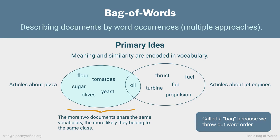For example, articles with pizza recipes probably share a lot of the same vocabulary like flour, tomatoes, yeast, and so on. But they won't have as much vocabulary in common with articles about jet engines. So if two documents have a lot of overlapping vocabulary, then they likely belong to the same class. It's called a bag because the order of the words in the document is discarded. We care only whether a word occurred and maybe how frequently. For now, we'll just focus on whether a word occurred.